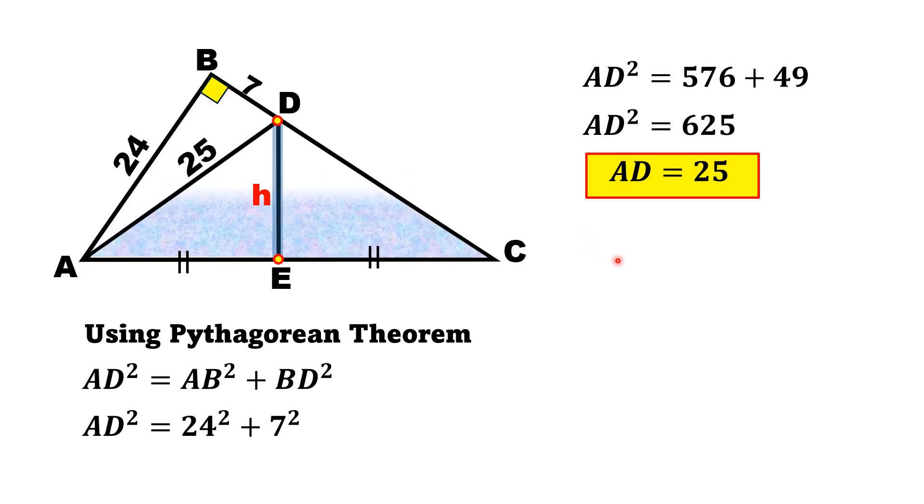Now let's consider triangle ADC, which is divided into two right triangles AED and CED. From here, we have angle AED equal to angle CED because both angles are 90 degrees.